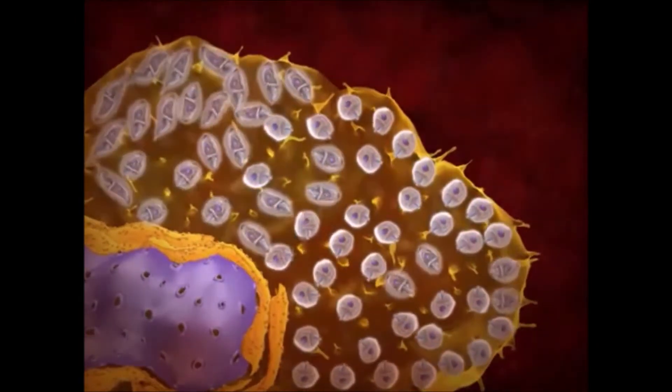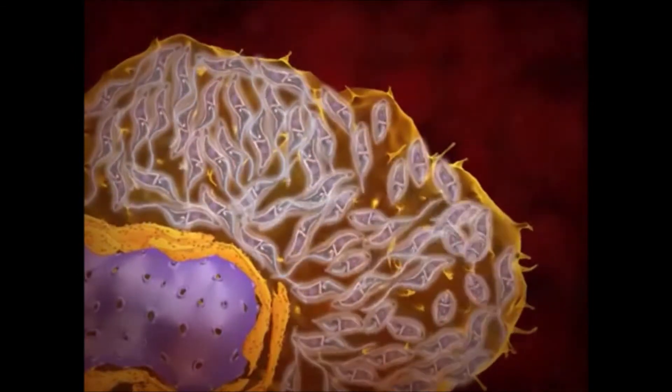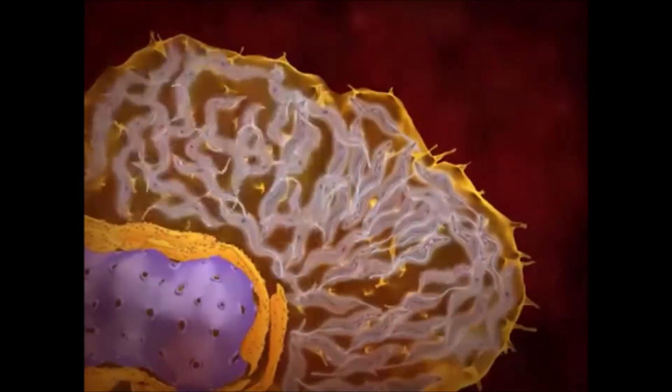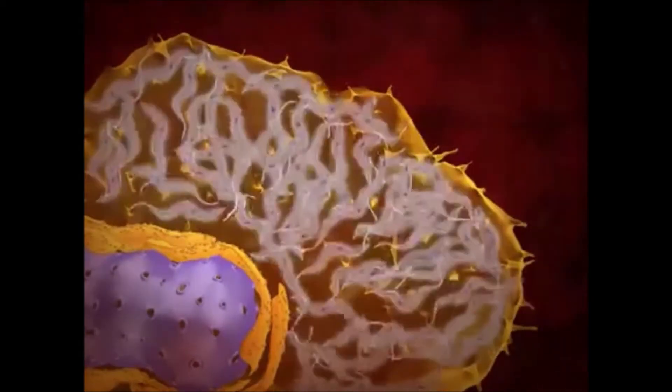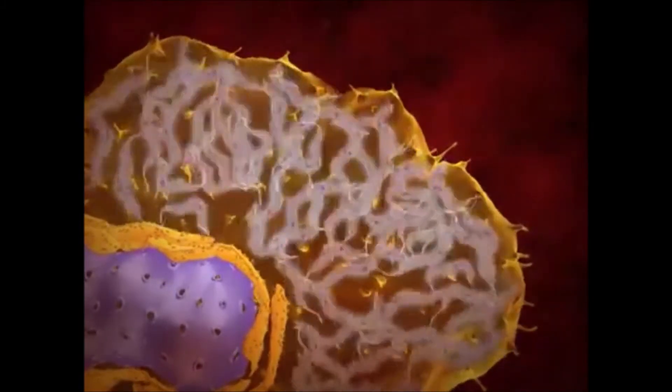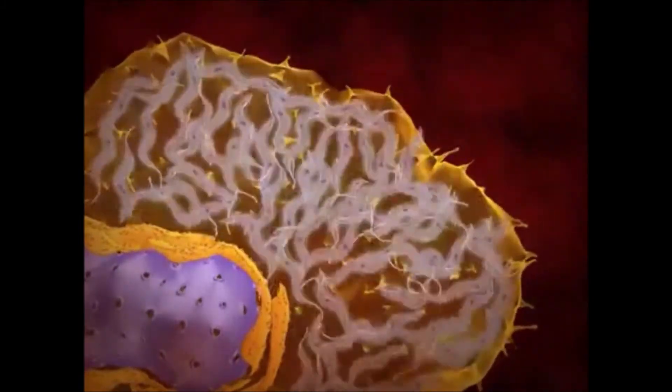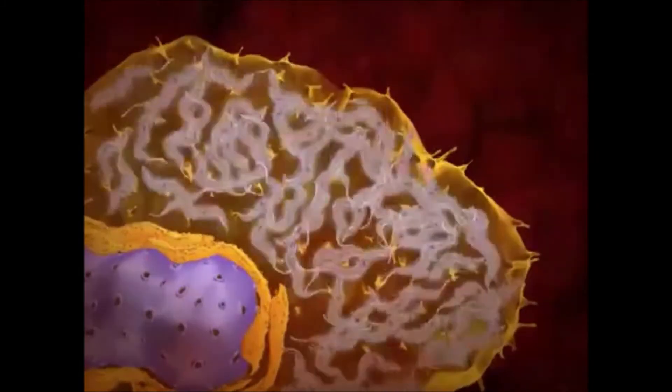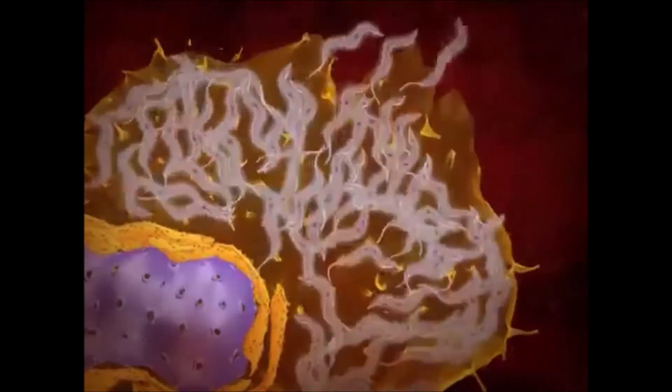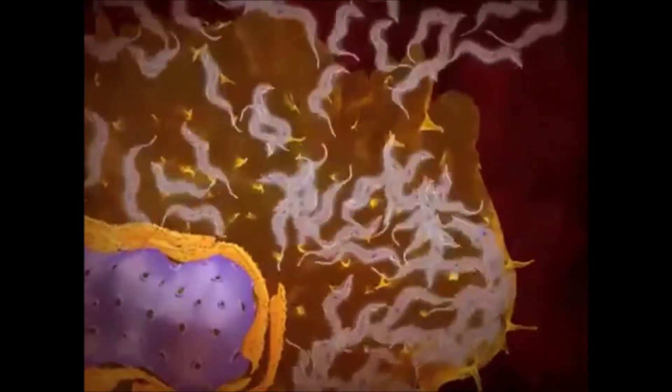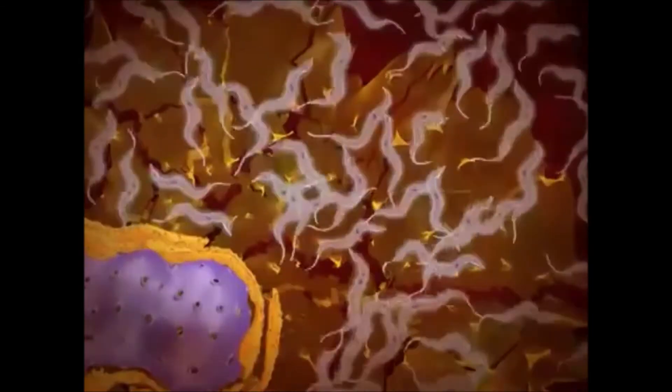Following division, the amastigotes transform into tripomastigotes, which show intense and constant movement that culminates with their bursting out of the cell. The tripomastigotes reach the extracellular space and, subsequently, the bloodstream. The parasites will now infect new cells.